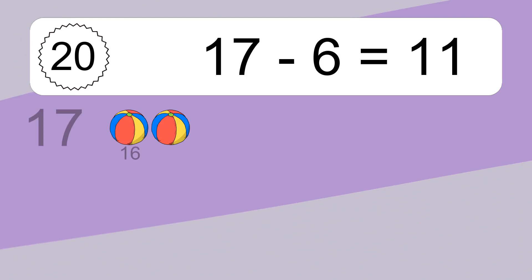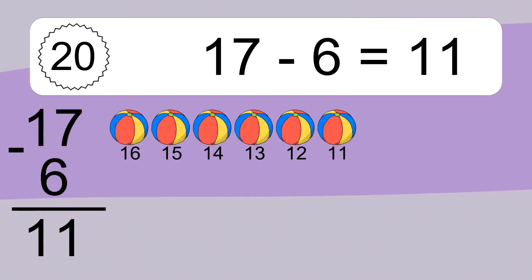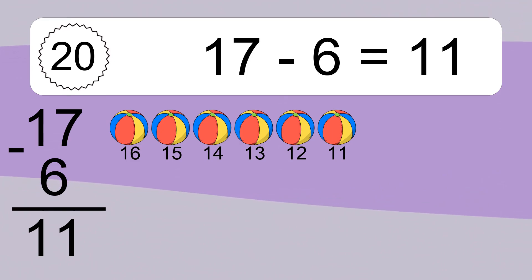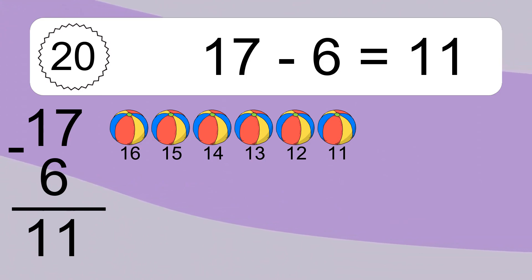17 minus 6 equals what? 17 minus 6 equals 11. Let's count it: 16, 15, 14, 13, 12, 11.